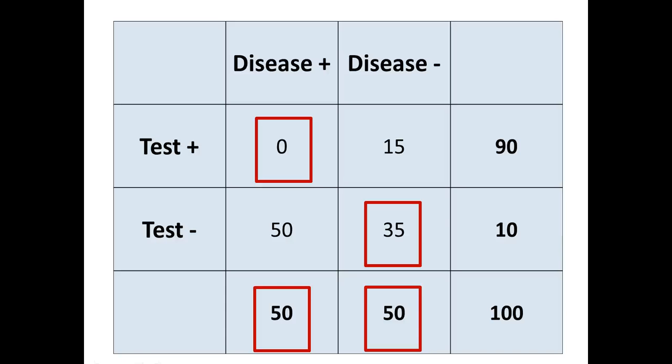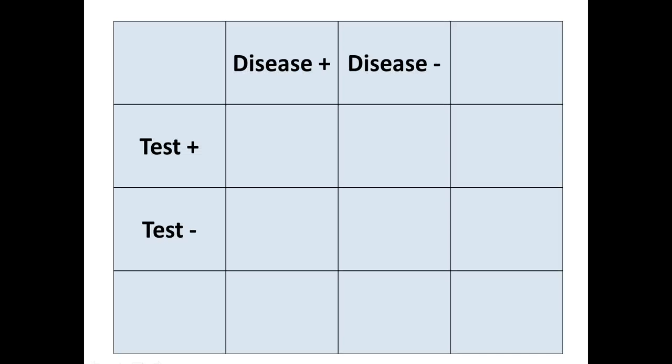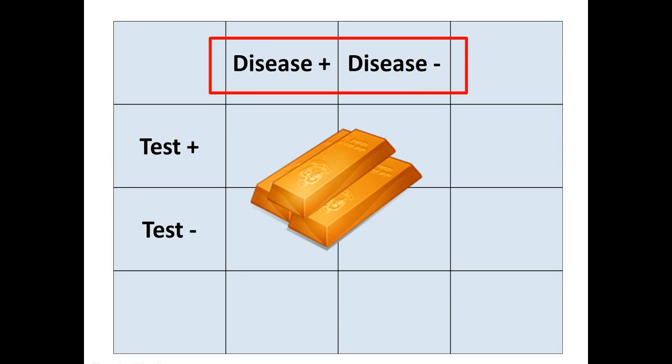Aside from needing both, there are other very important limitations associated with these measures. In biostatistics, there is no such thing as a free lunch — everything always has very important limitations that are often overlooked. The first important limitation has to do with our validation study. In order to compare test results to disease status, you need an accurate measure of disease status. For some conditions we have a good gold standard test, but for others we don't, making it very hard to determine actual disease status.